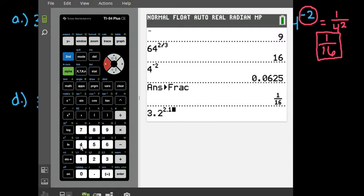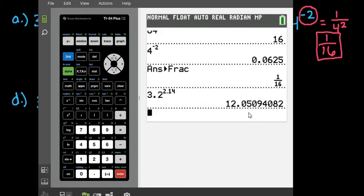Oops, hit the wrong button. And you can see that it's approximately 12.05094082, and this will continue out forever and ever. I recommend rounding to a minimum of 3 decimal places. You can always go to 4 just to be a little bit on the safer side, but I always go at least 3 places.